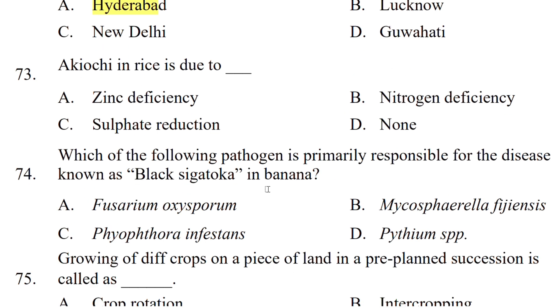AQC in rice is due to — zinc deficiency, nitrogen deficiency, sulphate reduction, or none? The correct answer is sulphate reduction.